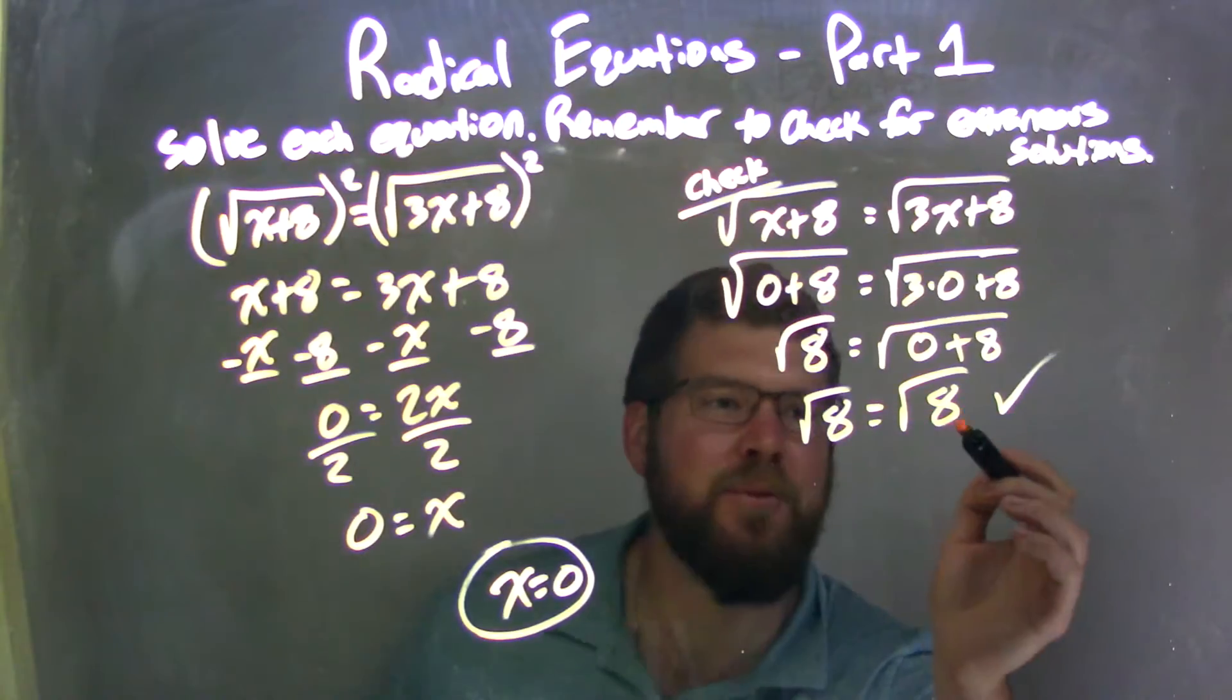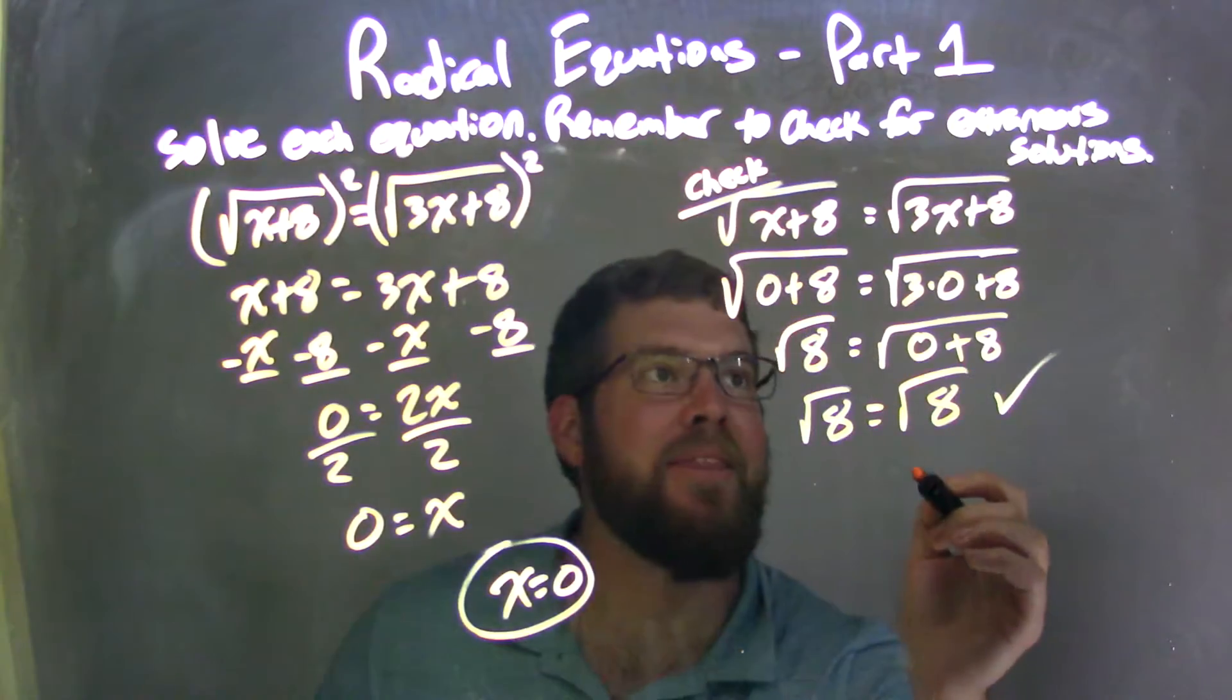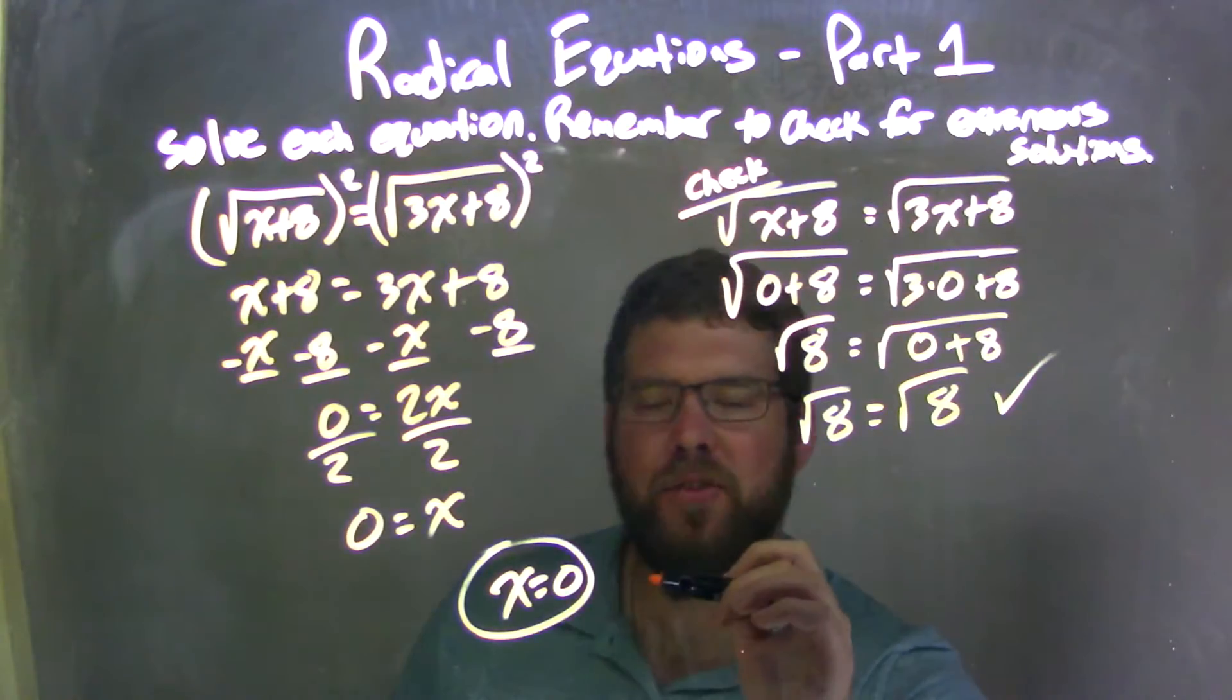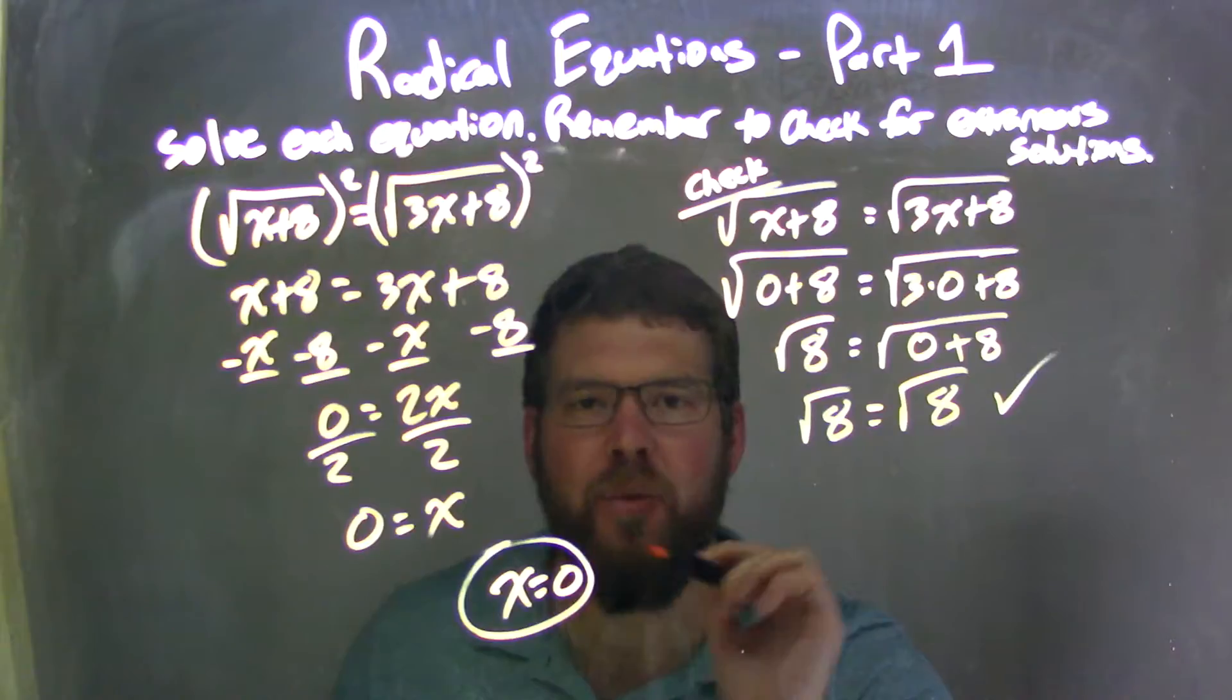They're equal, right? Square root of 8 is equal to square root of 8. They're the same thing. So that confirms we have no extraneous solutions, and our final answer is correct, and it is x equals 0.